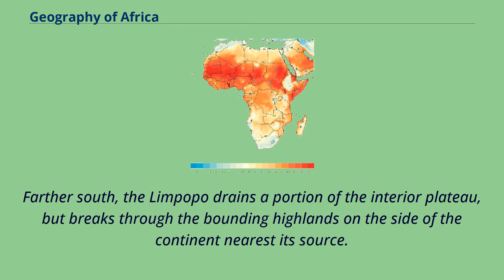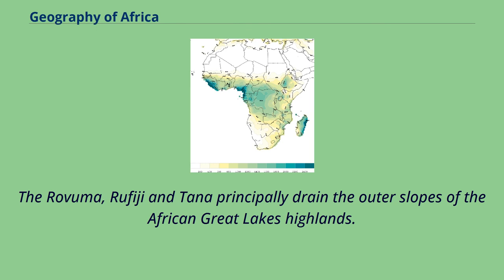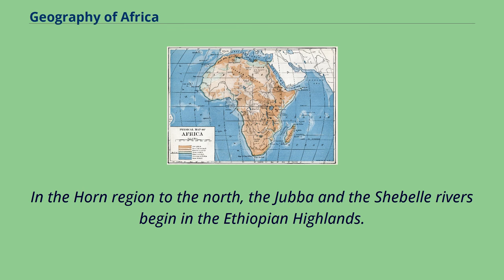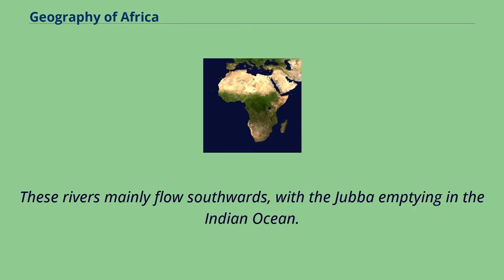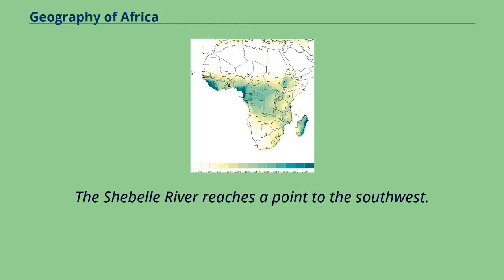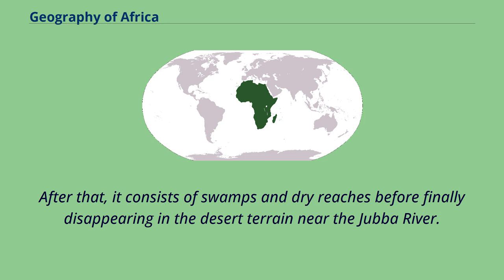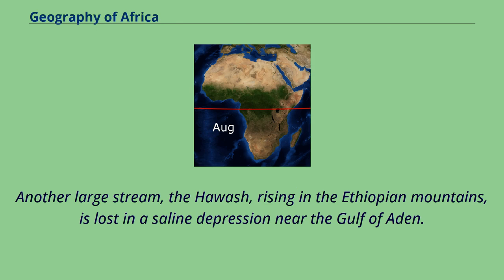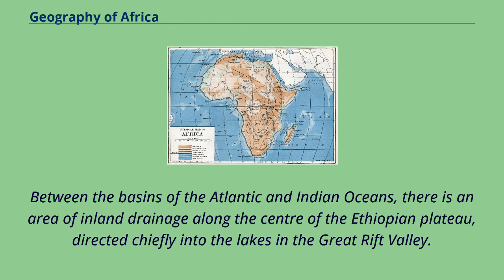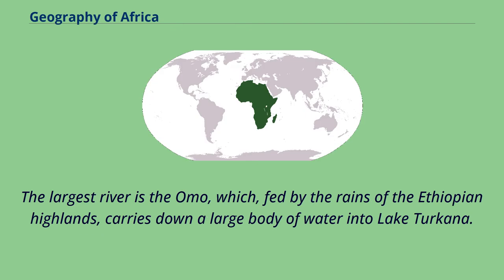Farther south, the Limpopo drains a portion of the interior plateau, but breaks through the bounding highlands on the side of the continent nearest its source. The Rovuma, Rufiji and Tana principally drain the outer slopes of the African Great Lakes highlands. In the Horn region to the north, the Jubba and the Shebelle rivers begin in the Ethiopian highlands. The Shebelle river reaches a point to the southwest, then consists of swamps and dry reaches before finally disappearing in desert terrain near the Jubba river. Another large stream, the Awash, rising in the Ethiopian mountains, is lost in a saline depression near the Gulf of Aden. Between the basins of the Atlantic and Indian oceans there is an area of inland drainage along the center of the Ethiopian plateau, directed chiefly into the lakes in the Great Rift Valley. The largest river is the Omo, fed by the rains of the Ethiopian highlands, which carries down a large body of water into Lake Turkana.